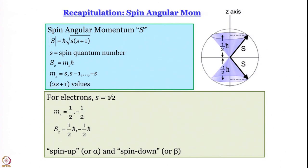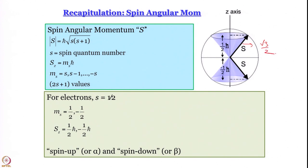We started a small calculation in an earlier module which we did not complete. This length — as we said — is √(3)/2 (in units of ℏ), because s = 1/2, so s(s+1) = 3/4, and taking the square root gives √3/2. If you want, we can write it as √3 ℏ/2. In quantum mechanics, quantities are often written in terms of ℏ as the unit, and the z-component is ℏ/2.